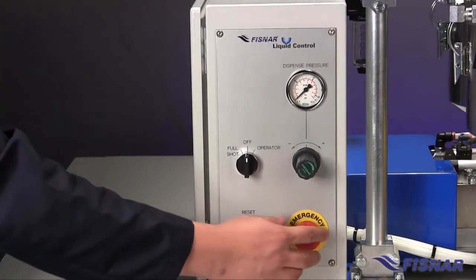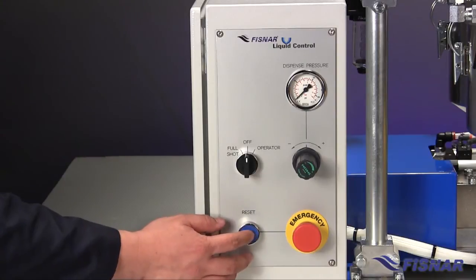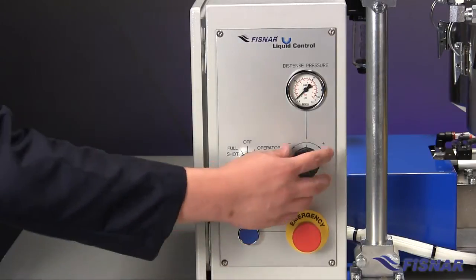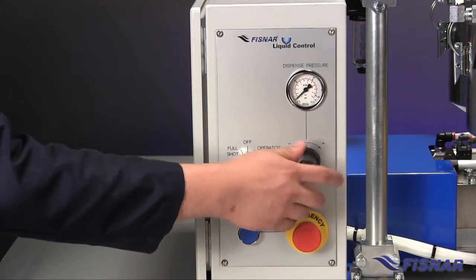Check that the e-stop on the front panel is open. Press the blue reset button and set the dispense regulator to 20 PSI, being the minimum pressure required.